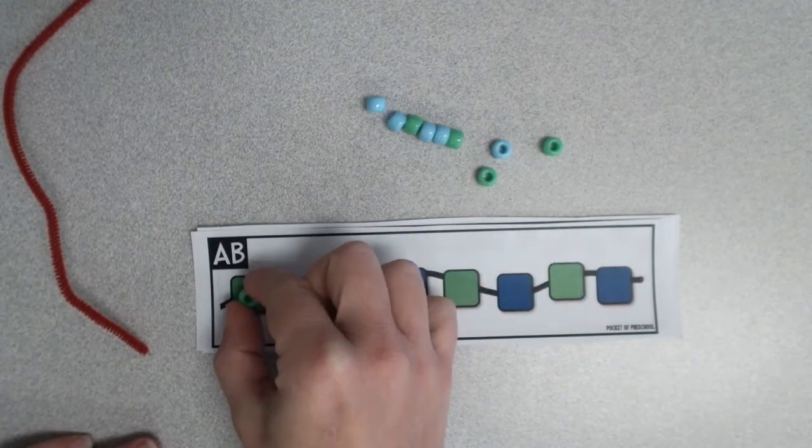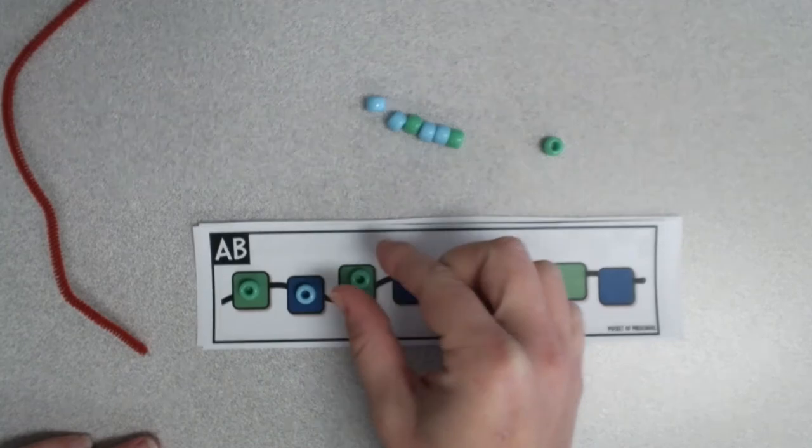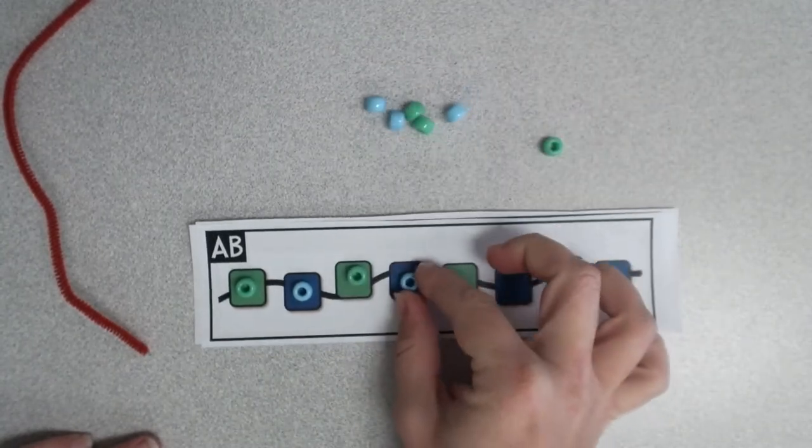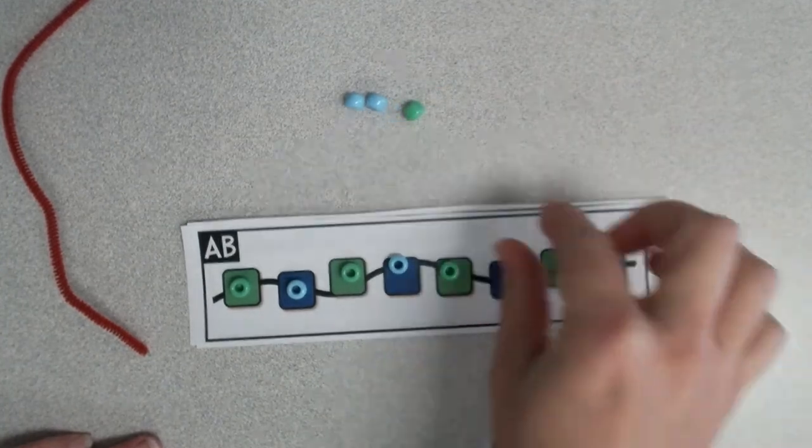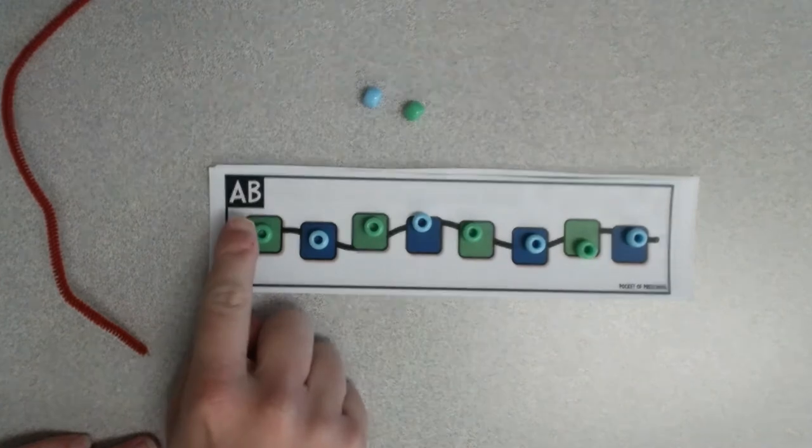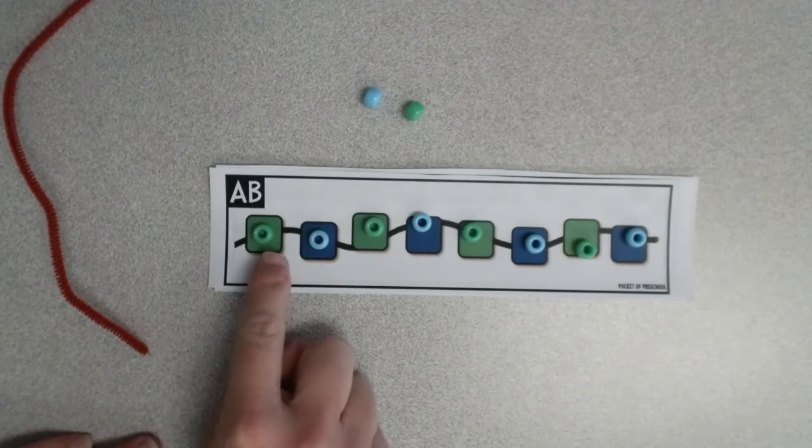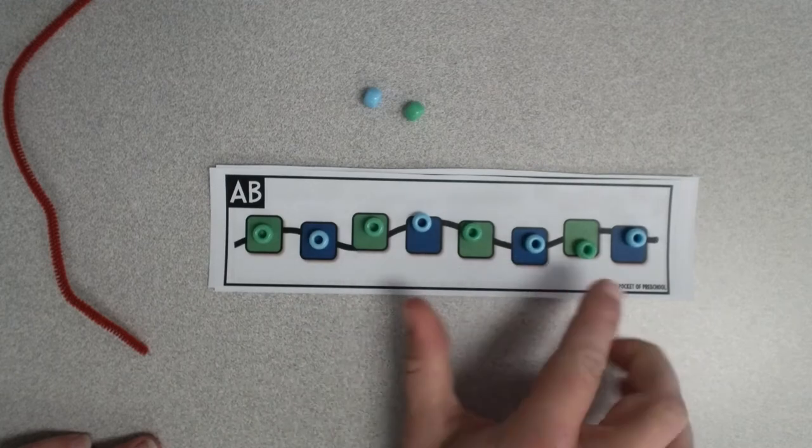A green bead, a blue bead, a green bead, a blue bead, green, blue, green, blue. Parents, this is called an A-B pattern because we go back and forth. A-B, A-B, A-B, all the way down the row.